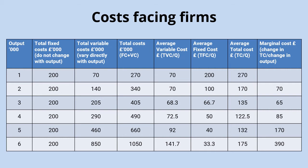The first column shows units of output — in thousands — increasing as we go down each row. The first cost column is total fixed costs. Fixed costs are costs which do not change directly with output, and you can see that as you go down the rows the fixed costs are always two hundred thousand pounds. Those are costs like rent and utilities — it doesn't matter how much output you produce, the fixed costs are going to be unchanging.